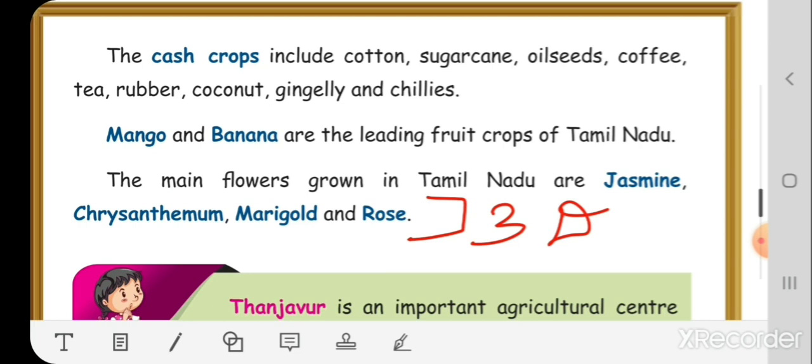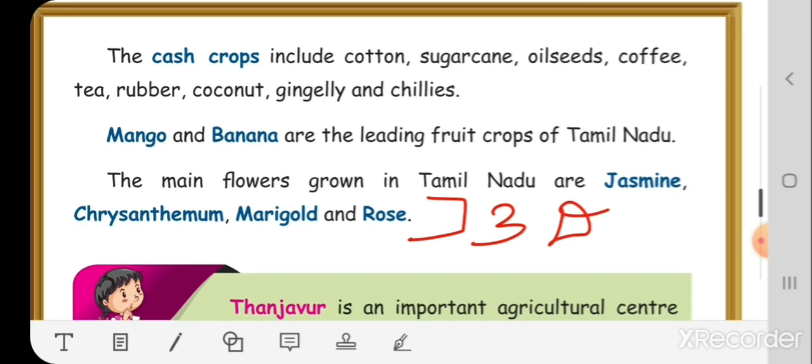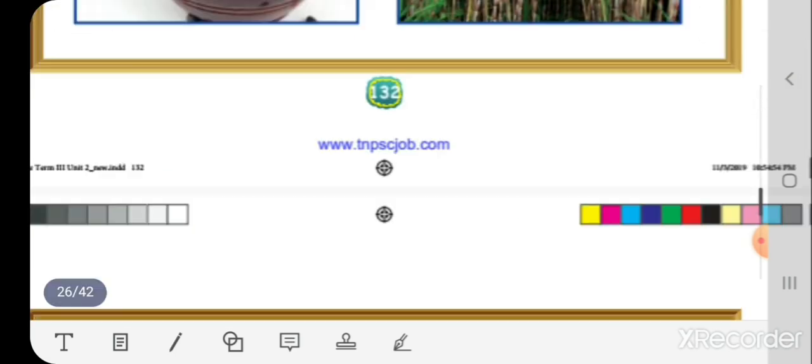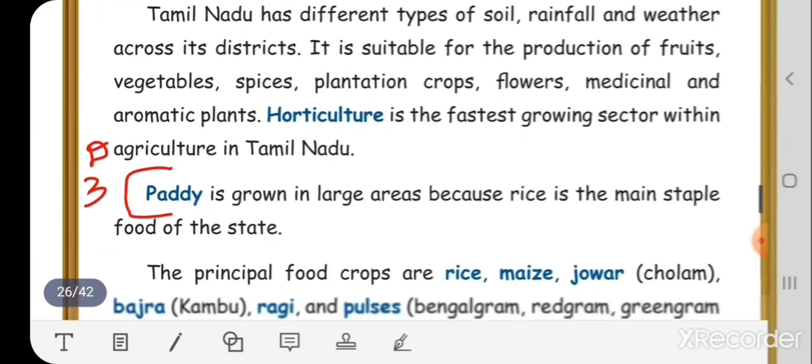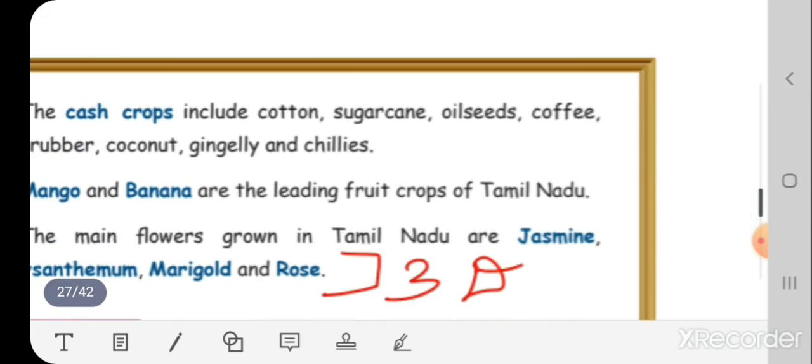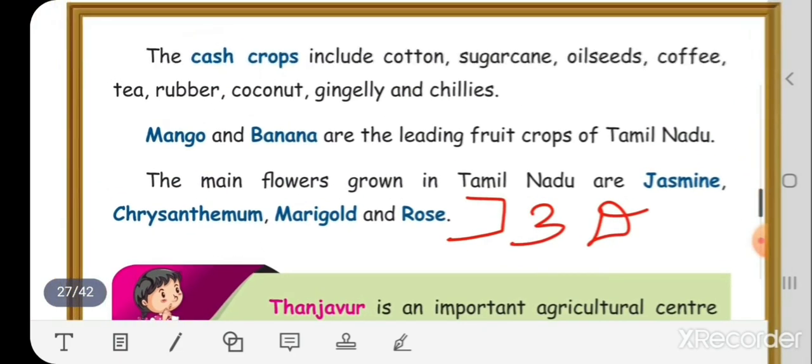The main flowers grown in Tamil Nadu are jasmine, chrysanthemum, marigold, and rose. This is the third detail answer. You can mark these answers in your textbook also, children.